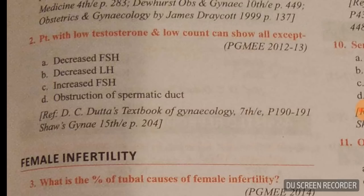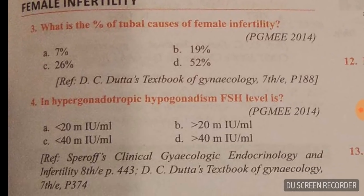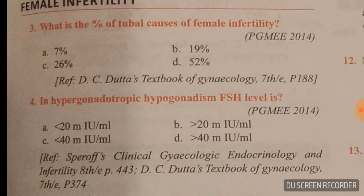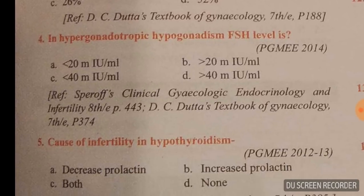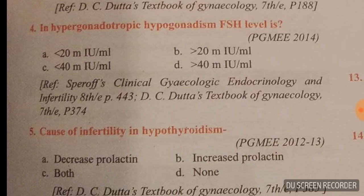Because there is no obstruction of the spermatic cord — in obstruction, FSH and LH levels are normal. Question number three: the percentage of tubal cases as causes of female infertility — you have to memorize this — it is 26 percent. There is no trick to remember this.